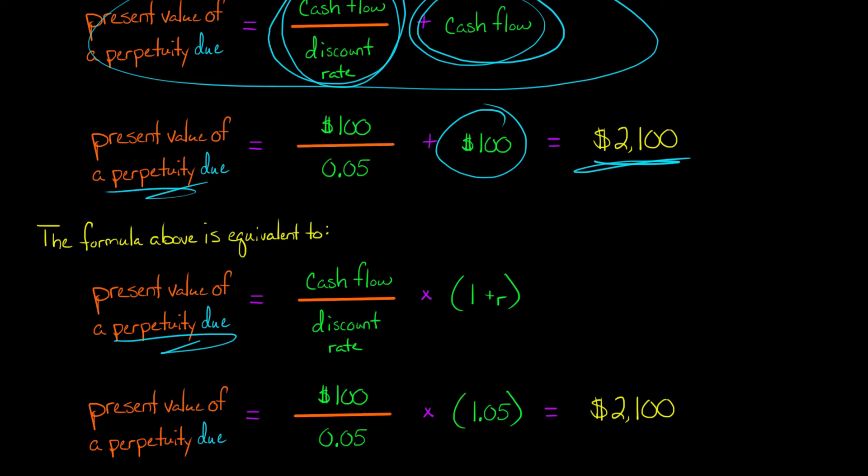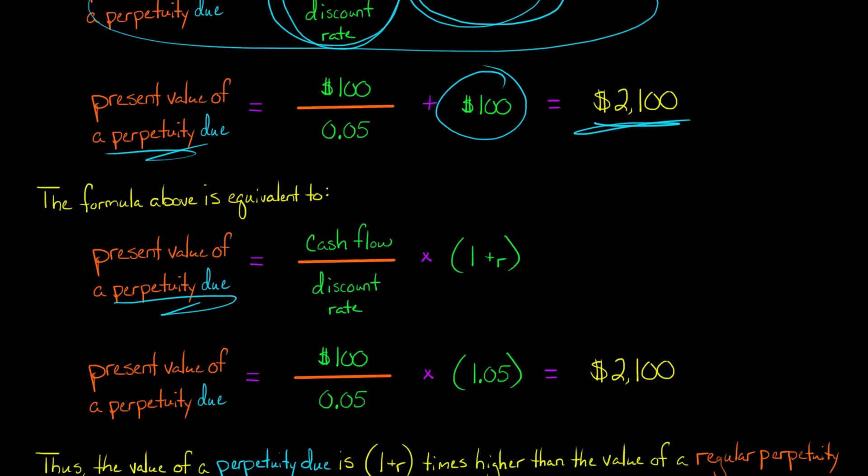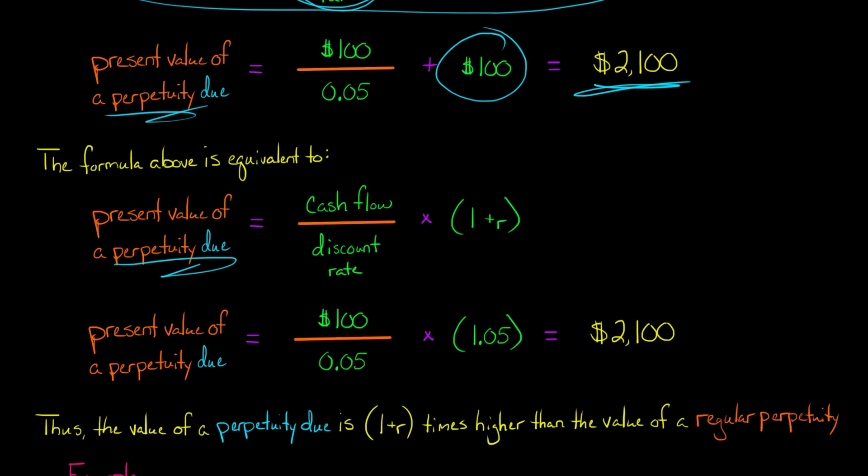Now, it's just a different way to get to the same answer. You still get $2,100 is the present value of a perpetuity due, right? You take the regular perpetuity here, then you multiply it by one plus r. So what that is showing is that the value of a perpetuity due is one plus r, one plus the discount rate, times higher than the value of the regular perpetuity.